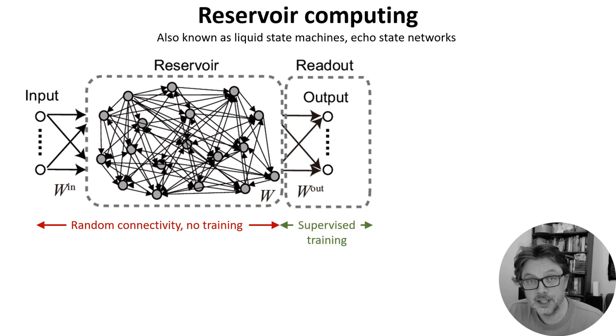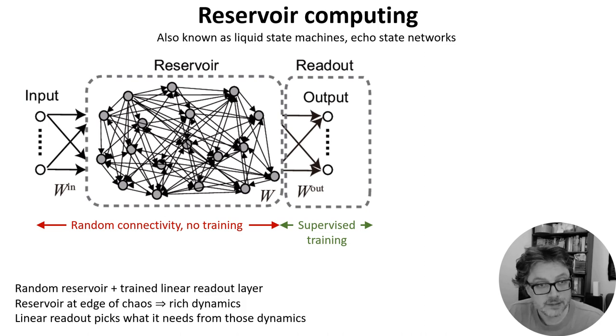The recurrent group is connected to a linear readout layer which is trained with a supervised algorithm to reproduce a desired time varying output. You initialize the recurrent neurons with weights which put the network dynamics into a near chaotic state. The idea is that near chaos you will find a rich set of trajectories in the dynamics of these neurons and by doing a linear readout you can approximate any dynamics you like.